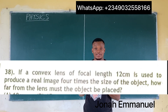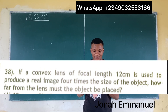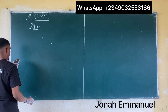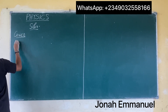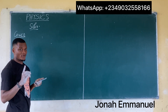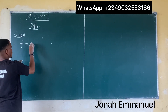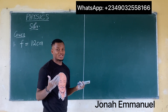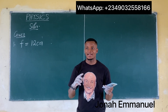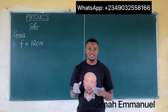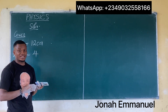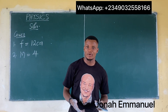Next question: if a convex lens of focal length 12 cm is used to produce a real image 4 times the size of the object, how far from the lens must the object be placed? Given: focal length f equals 12 cm. The image is 4 times the size, which means magnification m equals 4. Whenever you see an image described as a certain number of times the object, that number is the magnification. The object distance u is unknown.